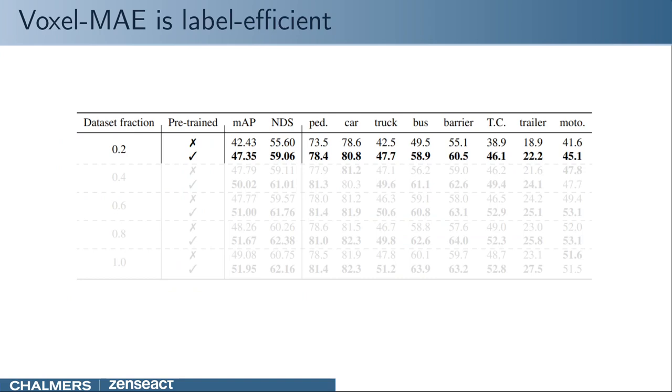After pre-training, we use the encoder to initialize the backbone of a 3D object detector. We compare its performance to a randomly initialized model on the nuScenes dataset. We pre-train the model on the entire training set, but vary the amount of labels available during fine-tuning. Voxel-MAE brings large gains when only 20% of the data is available.